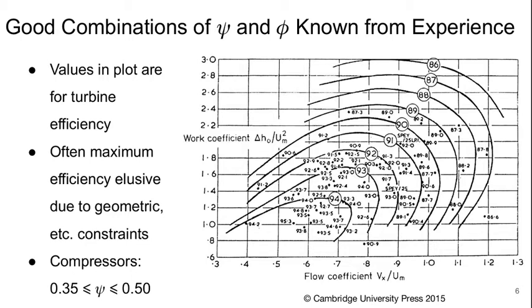Good combinations of work and flow coefficient in terms of being able to achieve high efficiency are not predictable a priori, but are known from experience. So the plot here is called the Smith Chart. And this looks at the variation of contours of constant efficiency plotted against work coefficient and flow coefficient for turbines. So the solid curves show approximate curves of constant efficiency and the number in a circle on each curve is the adiabatic efficiency associated with that curve.